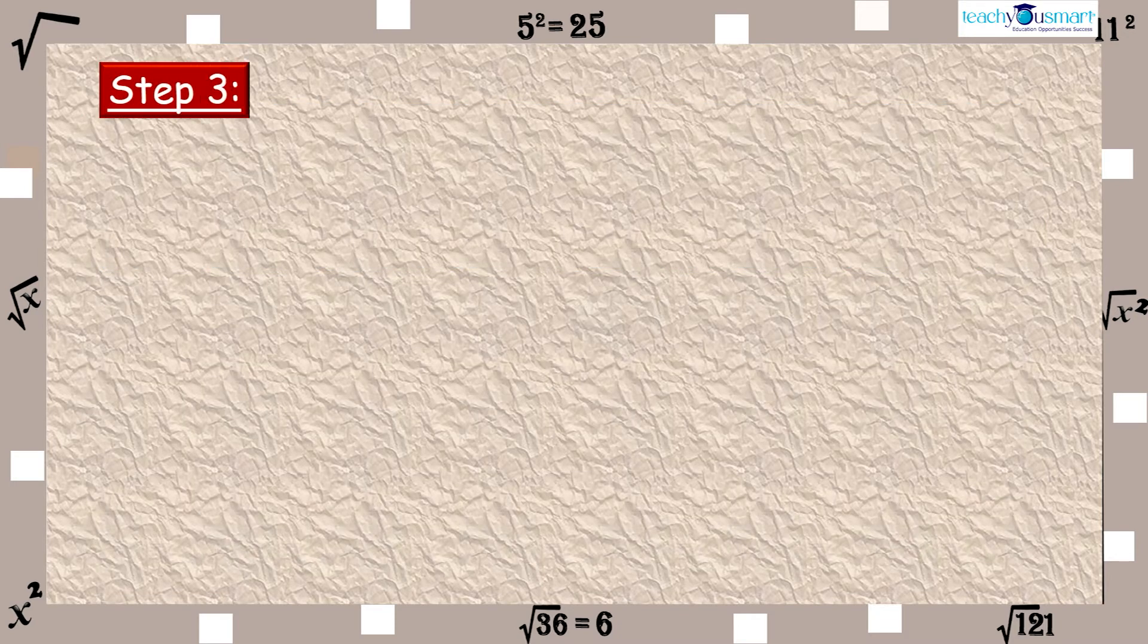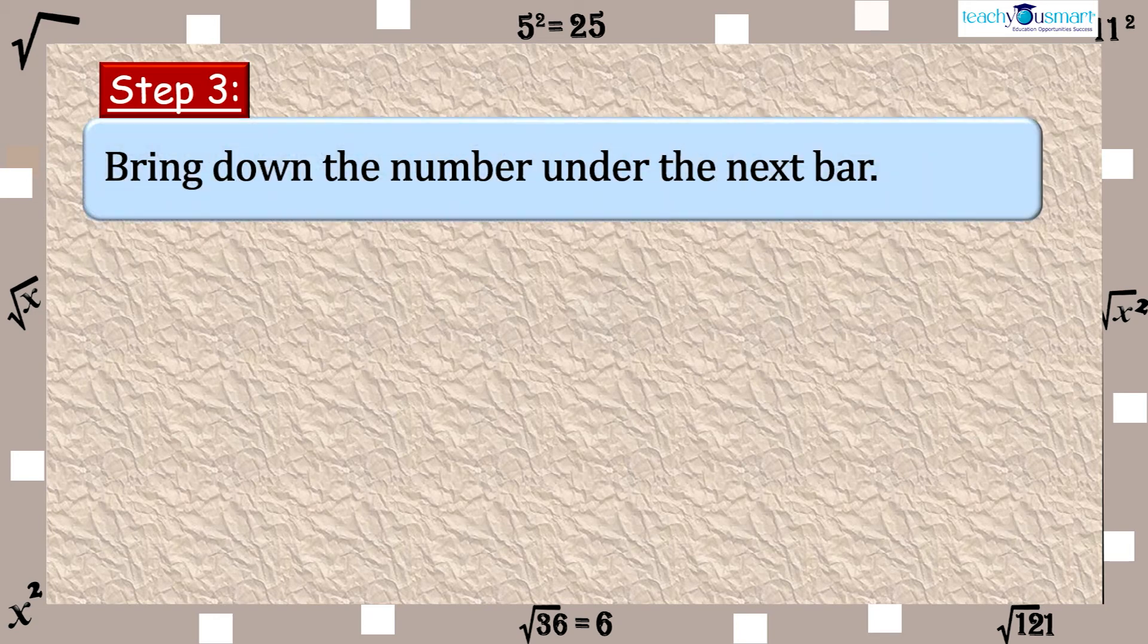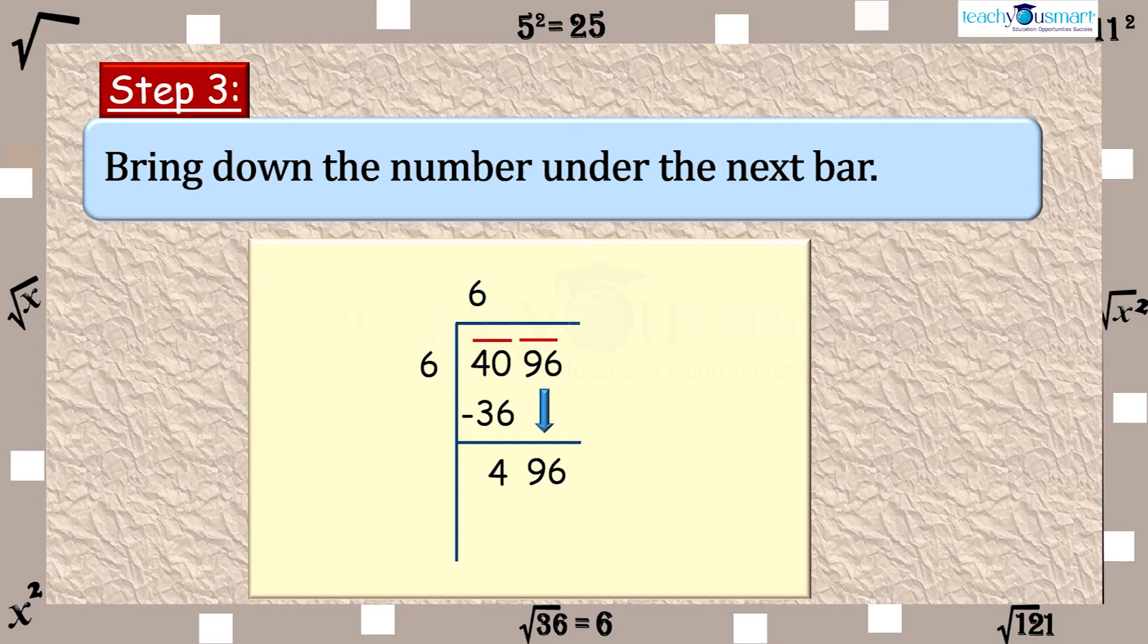Step 3: Bring down the number under the next bar, which is 96, to the right of the remainder. The new dividend is 496.